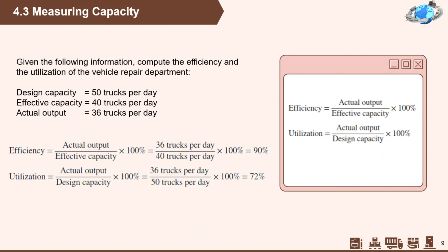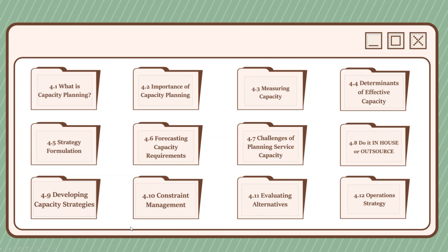90% efficiency looks pretty good, right? However, utilization is at 72% only, which is much less impressive — although probably more meaningful. At first we might think of increasing actual output, but since effective capacity acts as a lid on actual output, the real key to improving utilization is to increase effective capacity by correcting quality problems, maintaining equipment in good operating condition, fully training employees, and fully utilizing bottleneck equipment. Therefore, increasing utilization depends on being able to increase effective capacity, and this requires knowledge of what is constraining effective capacity.